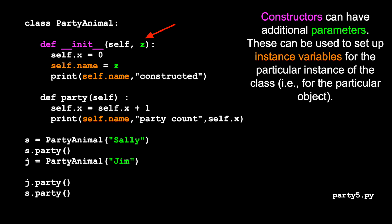And so the self comes in sort of automatically as the object is being constructed. But if we put a parameter on the constructor call, which is this party animal call, then this comes in as the z variable.